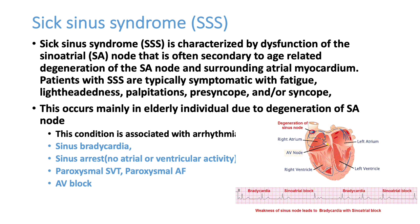In sick sinus syndrome, the sinus node is sick. You may get P waves sometimes, but sometimes the P wave will be absent with no ventricular response — the patient can have a missing pulse. On ECG you see no P wave and no QRS complex: a sinus pause. The patient can alternate between bradycardia and tachycardia due to the irregular sinus node, sometimes with prolonged sinus blocks.